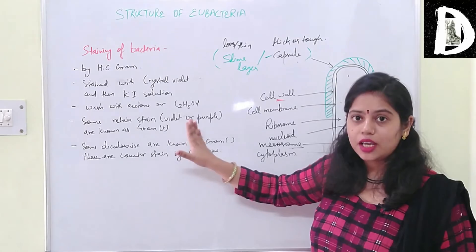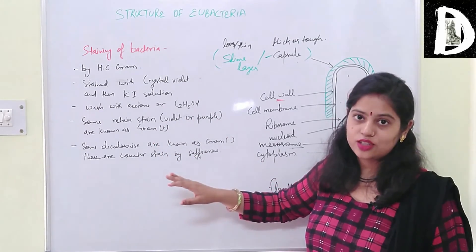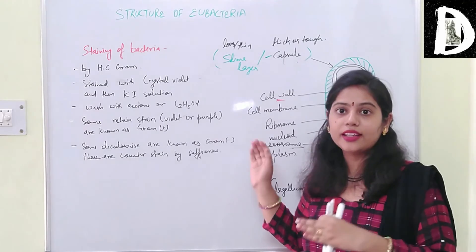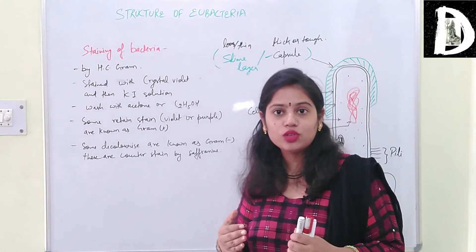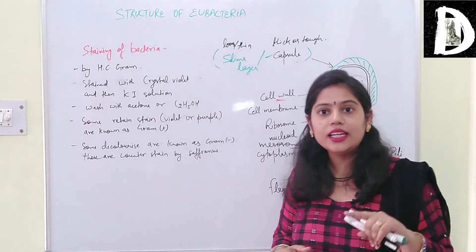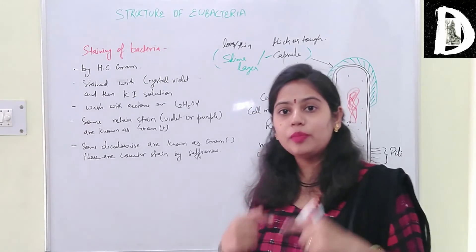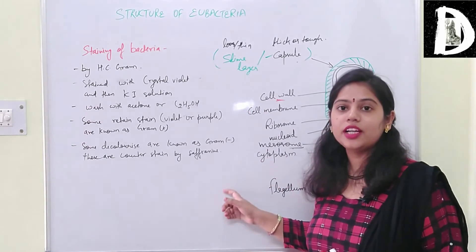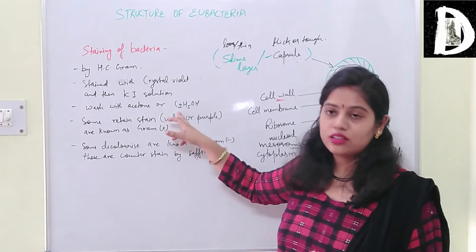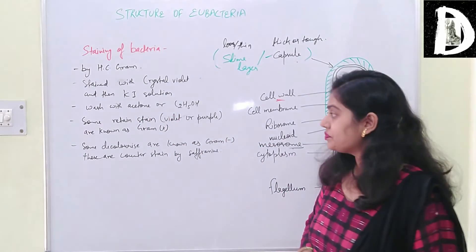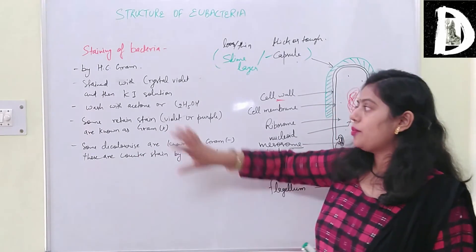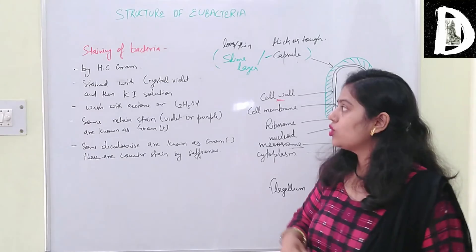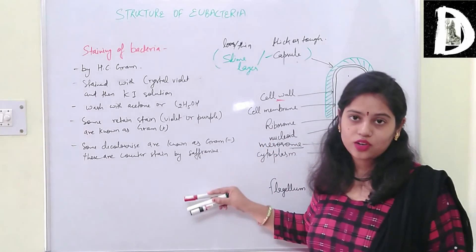The main reason some bacteria decolorize is their cell wall composition. Gram positive cell wall is a single layer with very low lipid content, so they retain the stain. In gram negative bacteria, there is a double layer with more lipid content. The lipid is removed by ethyl alcohol during washing, causing decolorization. So the main reason for decolorization in gram negative bacteria is the higher lipid content.